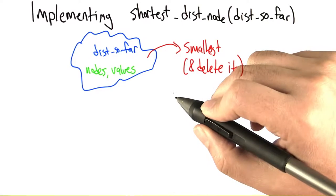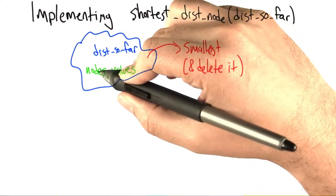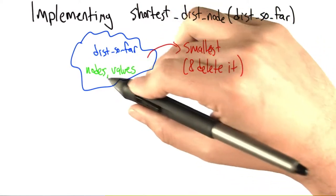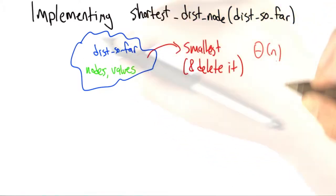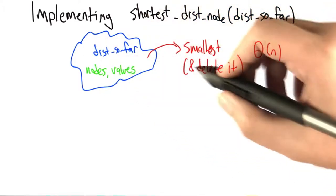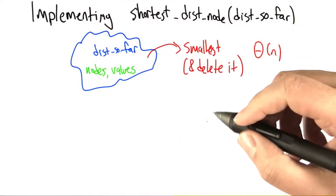So how many different values might be in this blob? Well, there can be at most one for each node. There are probably less. There are probably lots of nodes that haven't been added in yet. But at worst, it's going to be big theta of n. The nodes that are in the graph may have distances associated with them.